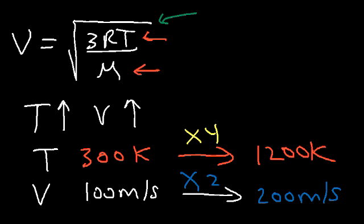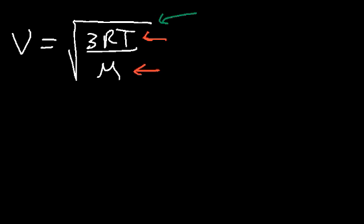What about the velocity and the molar mass? If we increase the molar mass of a gas, is the velocity going to increase or decrease? The molar mass is in the denominator of the fraction — any time you increase the denominator, the fraction's value decreases. So the velocity will decrease. It makes sense because heavy gas molecules move slower and lighter gas molecules move faster.